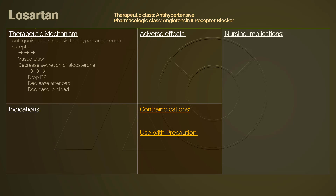By binding to these receptors, Losartan antagonizes the effects of angiotensin 2, leading to vasodilation and decreased levels of aldosterone. As a result, blood pressure is dropped, and cardiac preload and afterload are decreased.